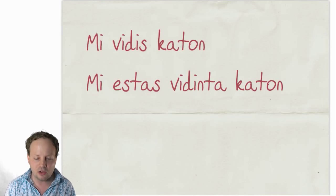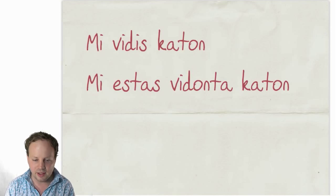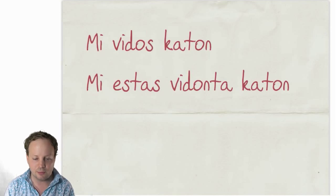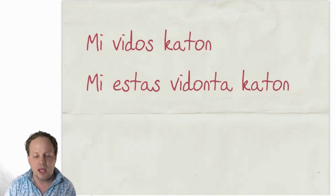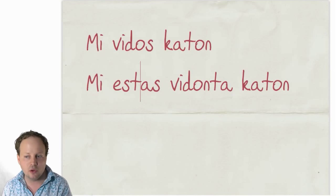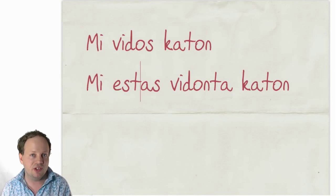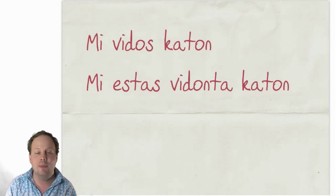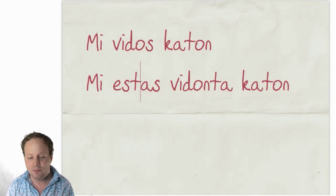You can also change it to the ONTA form for future tense. So MI ESTAS VIDONTA KATON — that's active future tense — means 'I am going to see a cat' or 'I am about to see a cat.'